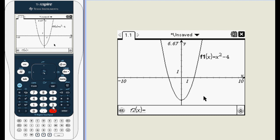You can always press tab to get back to the equations of your functions. Now enter f of x equals negative 3x.